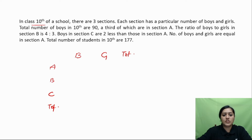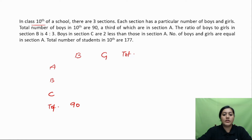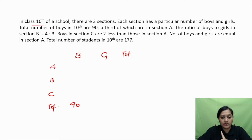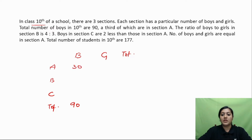Total number of boys in 10th are 90. A third of 90 are in Section A — a third of 90 gives you 30 boys in Section A.